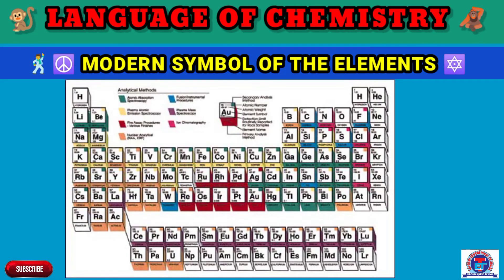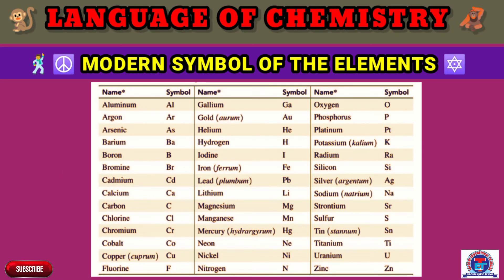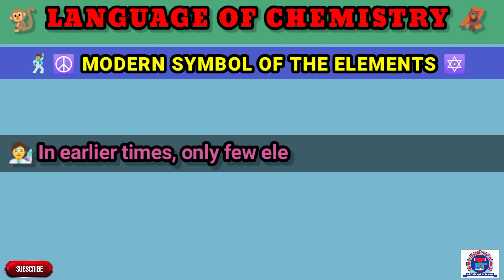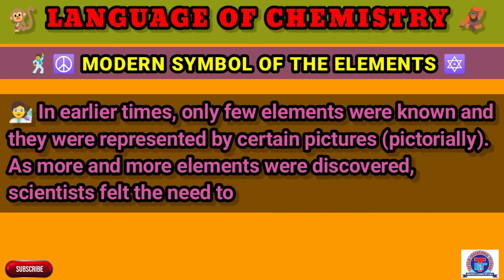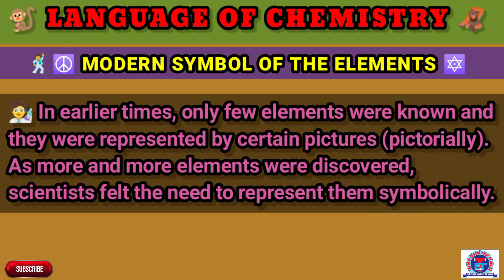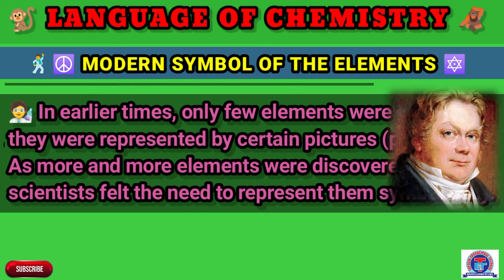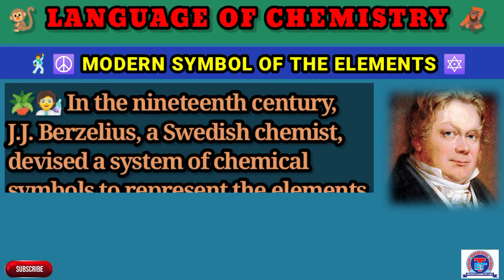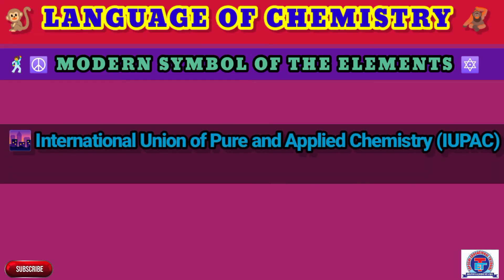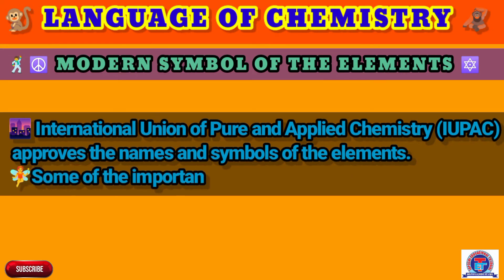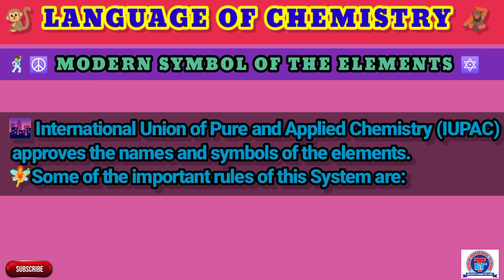Let's understand the modern concept of chemical symbols of elements. In early times, only a few elements were known and they were represented by certain pictures. As more and more elements were discovered, scientists felt the need to represent them symbolically. In the 19th century, J.J. Berzelius, a Swedish chemist, devised a system of chemical symbols to represent elements. The International Union of Pure and Applied Chemistry — IUPAC — approves the names and symbols of elements.